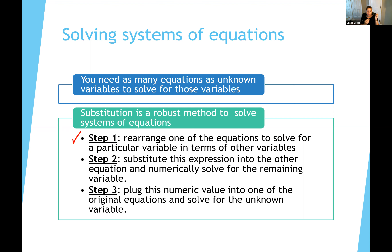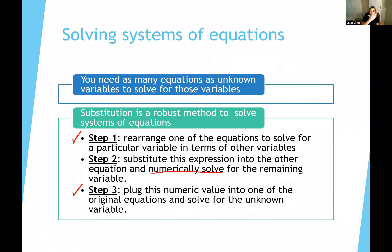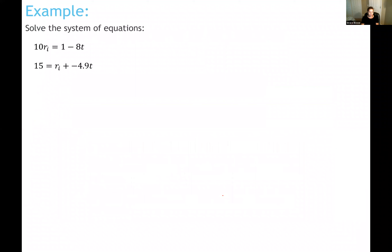In the substitution method, you start with two equations. Step one: algebraically rearrange one of the equations to solve for one of the variables — it will still have the other variable in it. Step two: substitute that expression for the variable into the other equation. By doing that, you've eliminated one variable and have one equation with one unknown, which you can solve numerically. Step three: plug that solved value back into the original equation to solve for the other unknown variable.